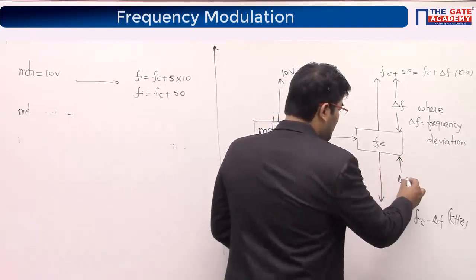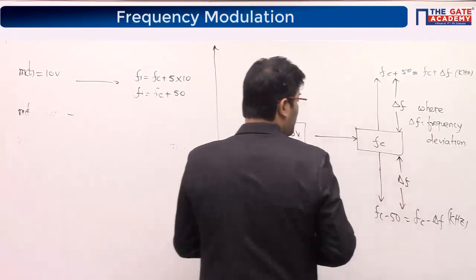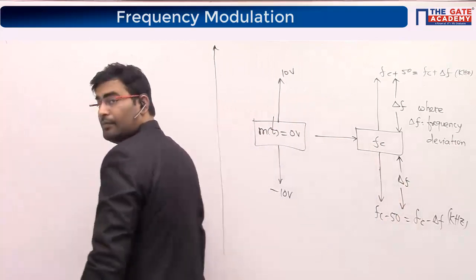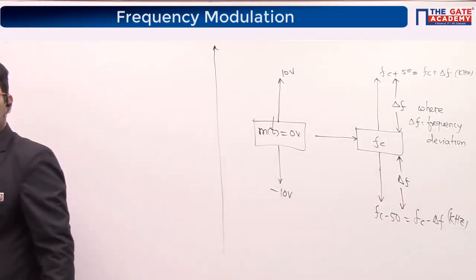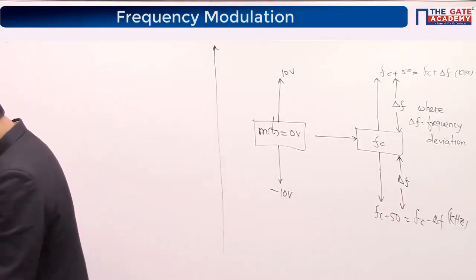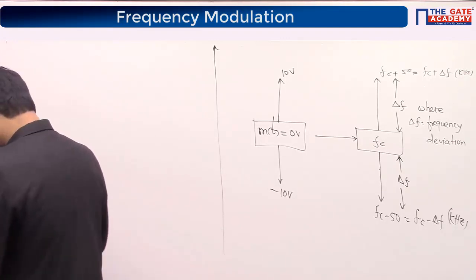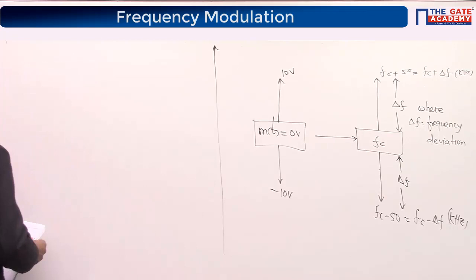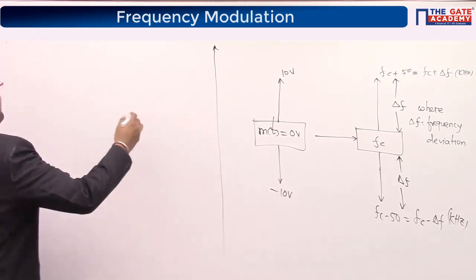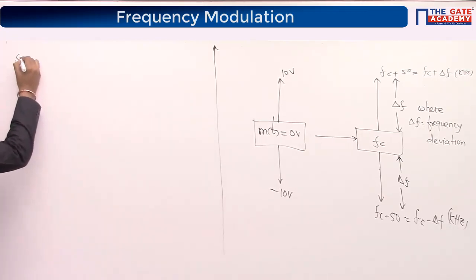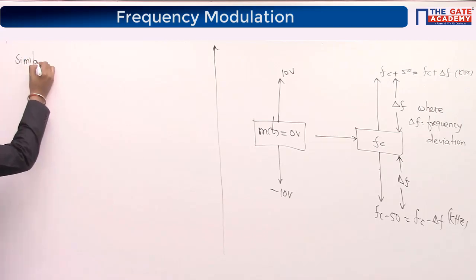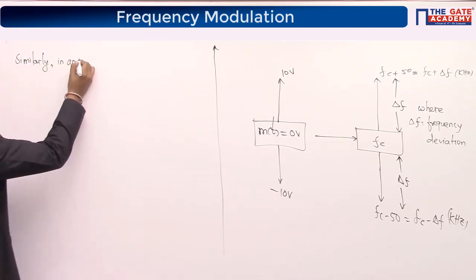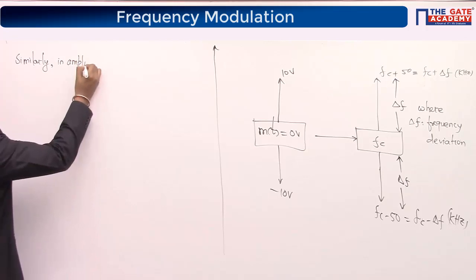Delta F is frequency deviation. Comparing with amplitude modulation: in AM, we changed the message signal from zero to max and min, changing the amplitude Ac from Ac(1 + μ) to Ac(1 − μ), giving Vmax and Vmin and the formula μ = (Vmax − Vmin)/(Vmax + Vmin). The same beautiful pattern is happening here with FM.